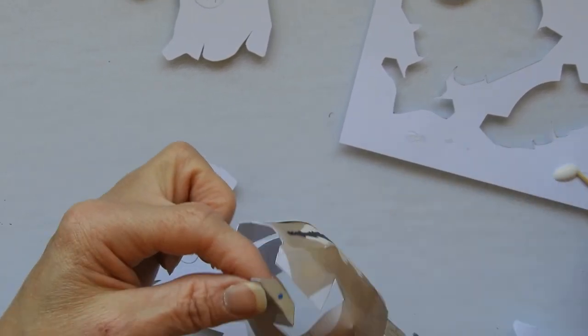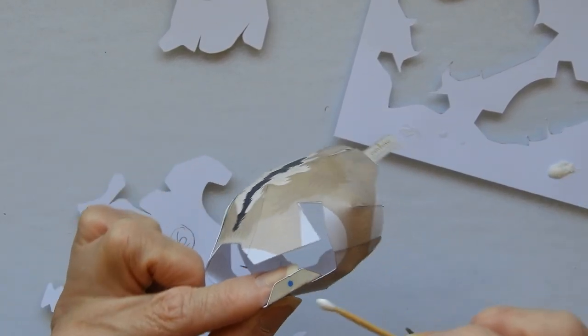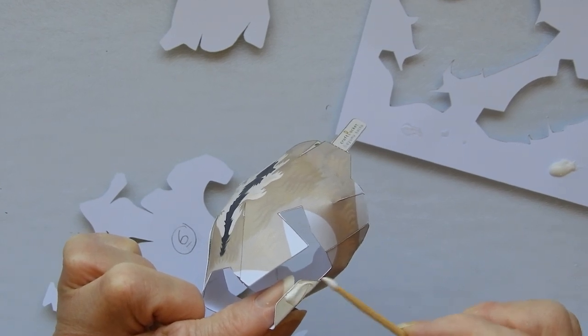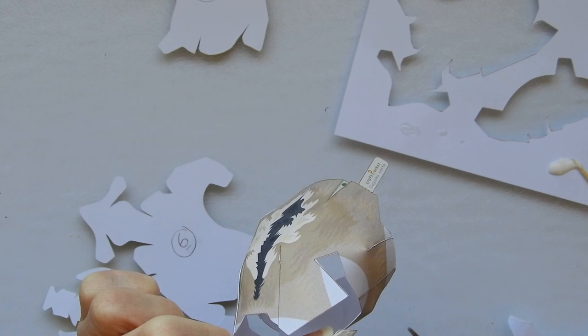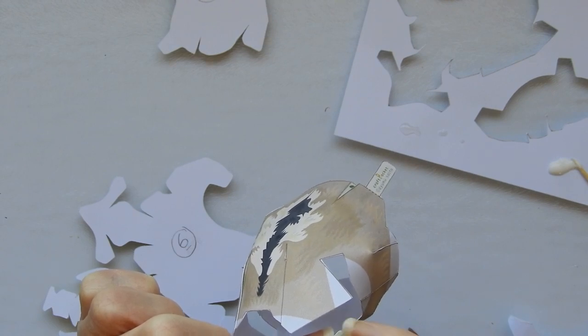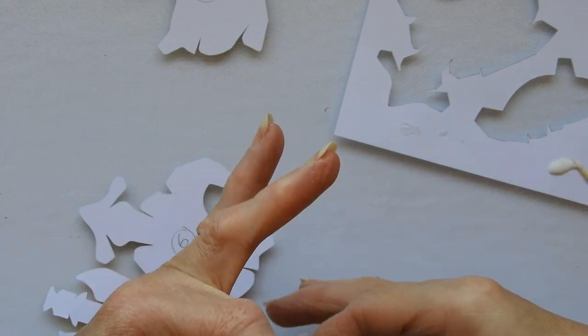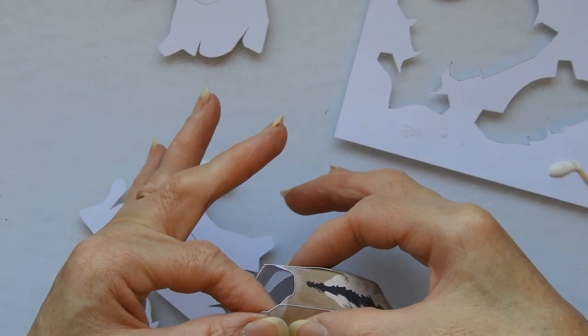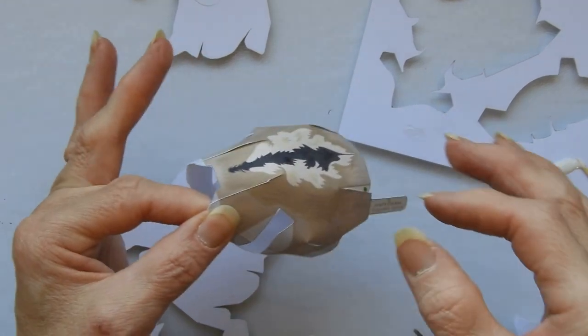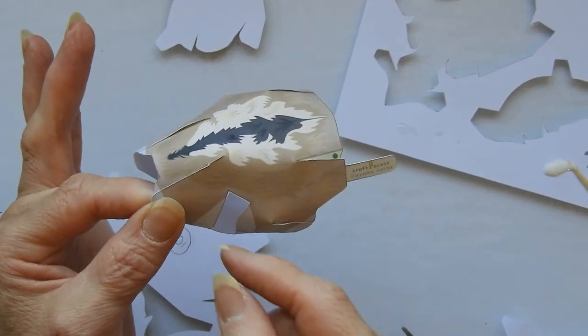So I've done that one and the last bit to do on this particular piece is this one here. A bit too much glue there so I'll just smooth that out with my little finger. There we go. And this piece here goes on there like so.